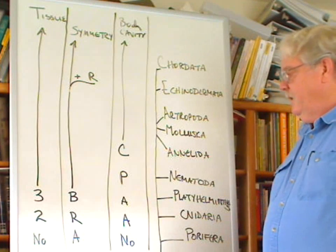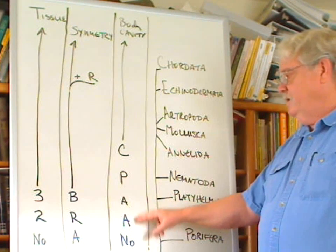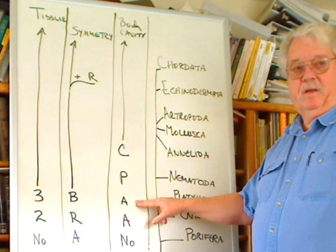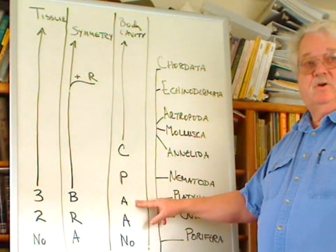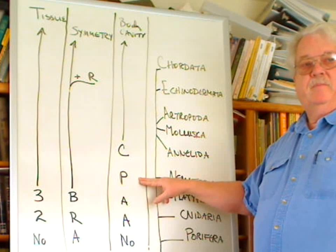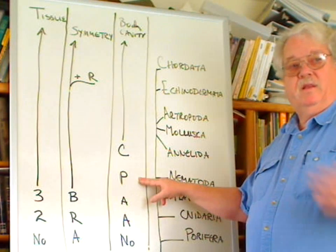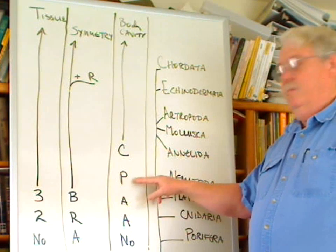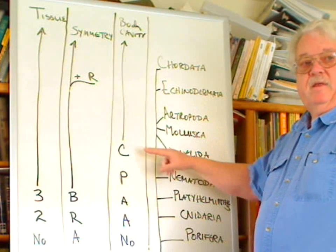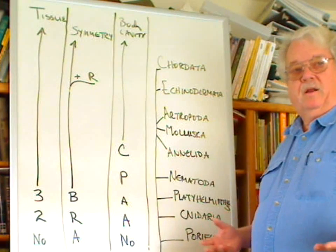Looking at body cavity: Porifera have none. The cnidarians and platyhelminthes are acoelomate — platyhelminthes being the first true acoelomates because they have mesoderm, but the mesoderm is solid. The nematodes are the only phylum that are pseudocoelomates, having a cavity within the mesoderm between the gut and the body wall, but it's unlined. Starting at the annelids on up, everything else is coelomate, with a lined body cavity in the mesoderm between the gut and the body wall.